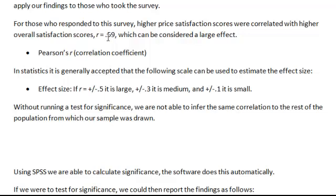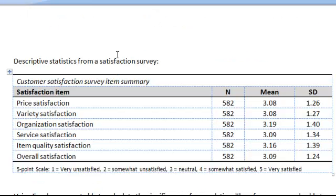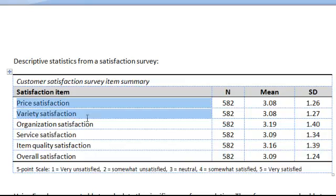Since this was a positive number, 0.59, if it were a negative number we would say: for those who responded to this survey, higher price satisfaction scores were correlated with lower overall satisfaction scores — meaning the higher the price, the lower the overall satisfaction. But in this case it's positive, so higher prices are correlated with higher overall satisfaction. It would also be important in your report to include all of the descriptive data for all of the satisfaction survey items in a table.